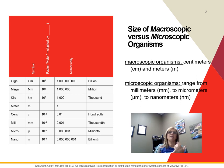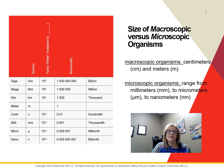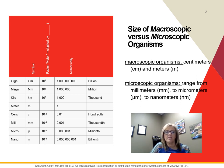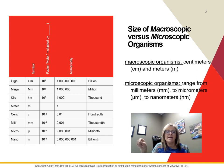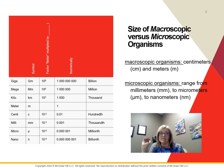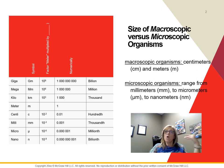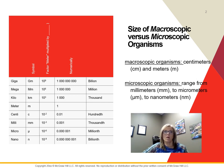Micro is one times ten to the negative six — you can see how small that number is, with five zeros after the decimal. Nano is ten to the negative nine, so you're going to have nine decimal places. These are very, very small, and it's hard to wrap our brain around exactly how small some of these organisms are.